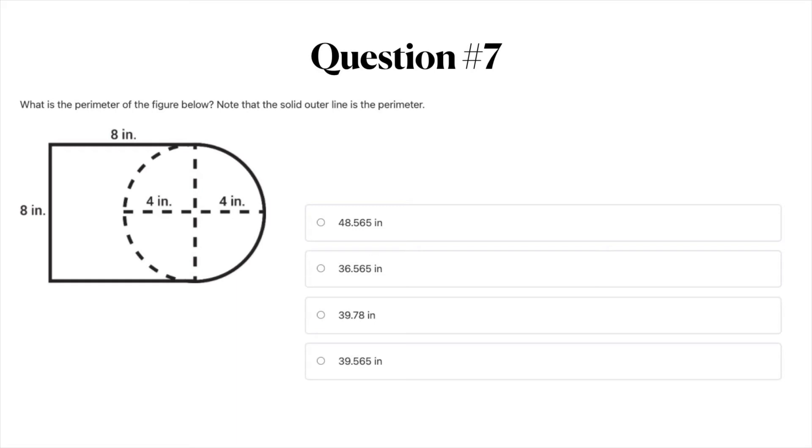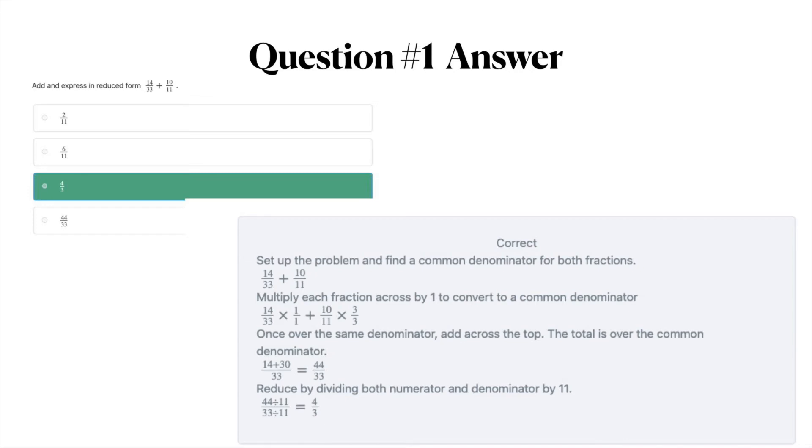The answer to question number one is C, 4 over 3. So first you set up the problem and find a common denominator for both fractions. Then you're going to multiply each fraction across by one to convert to a common denominator. Once you're over the same common denominator you add across the top. The total is over the common denominator. Then you'll reduce the fraction by dividing both the numerator and denominator by 11. And as you can see you have the whole problem here worked out for you in the answer. So if you want to take some time to look at this you can pause the video here.